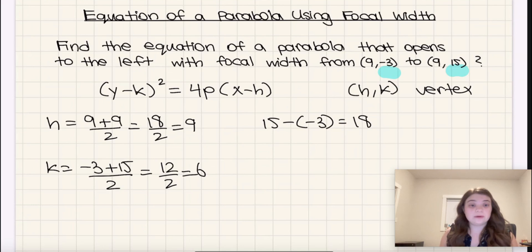We also know that the focal width is equal to 4 times the absolute value of p. So 4 times the absolute value of p would have to be 18. Then if we divide both sides by 4, we get that the absolute value of p is 4.5 or 9 over 2.